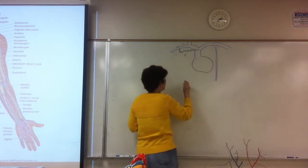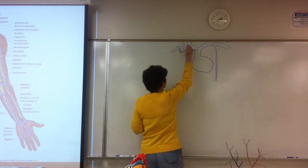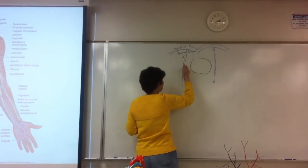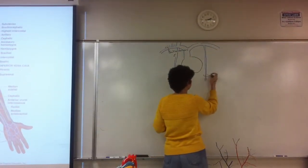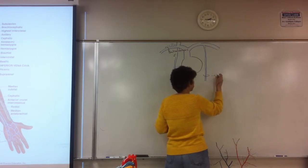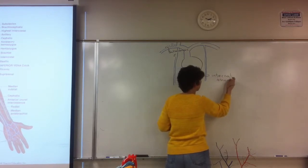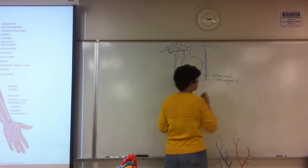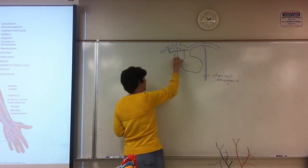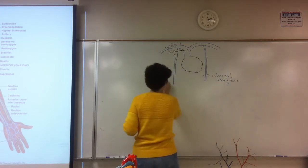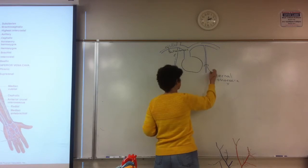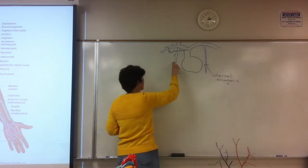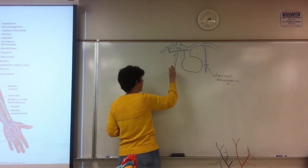There we go on this side. So the internal thoracic vein — it's going to receive our anterior intercostal veins.